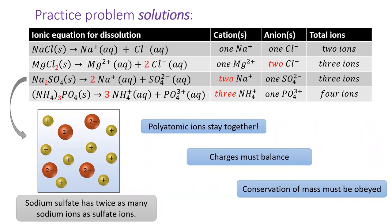Here are the solutions. Sodium chloride dissolves into two ions, one sodium and one chloride ion. Magnesium chloride dissolves into three ions, one magnesium and two chlorides. Sodium sulfate also dissolves into three ions, two sodiums and one sulfate.